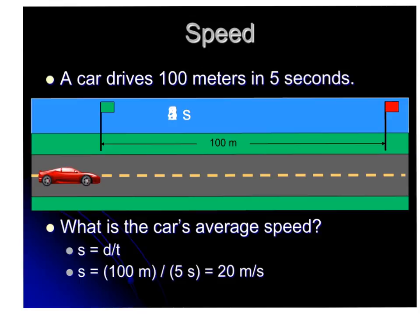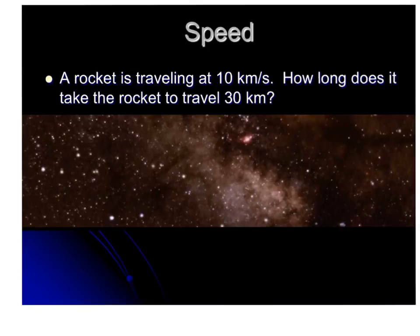Now if a car drives 100 meters in 5 seconds, what's the car's average speed? Well our equation is speed equals distance divided by time, so 100 meters divided by 5 seconds is going to give me 20 meters per second.